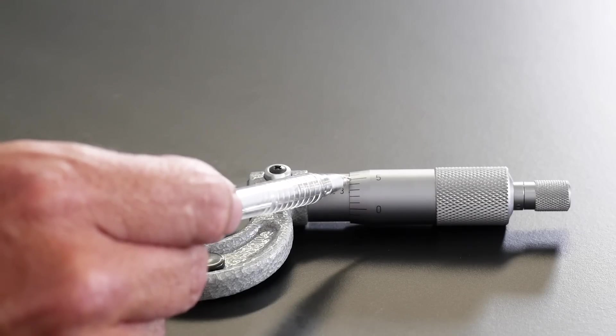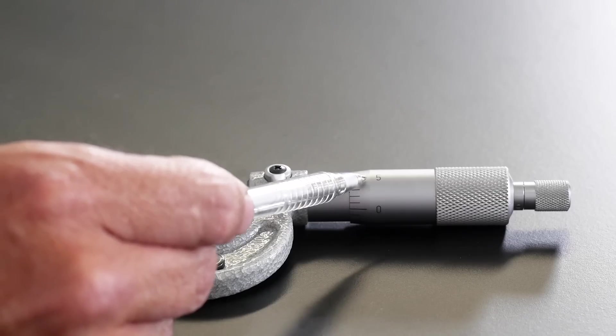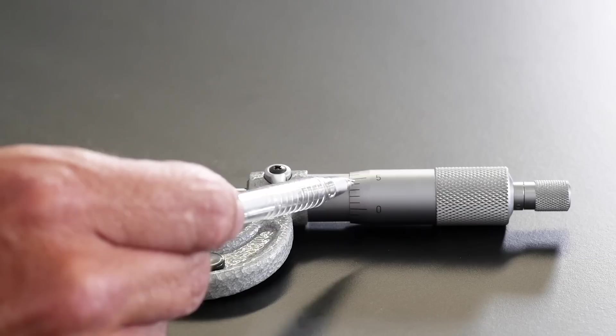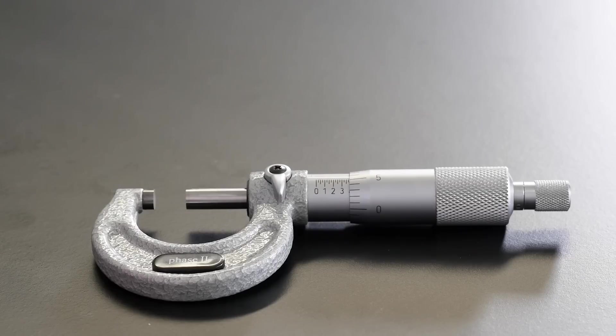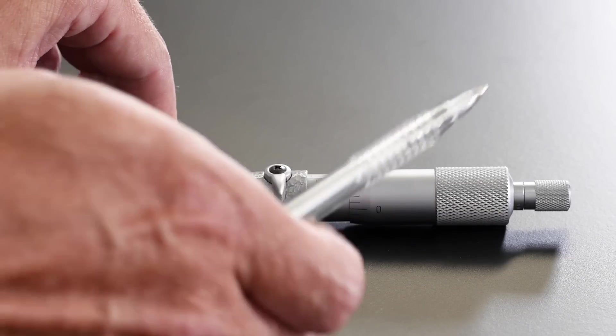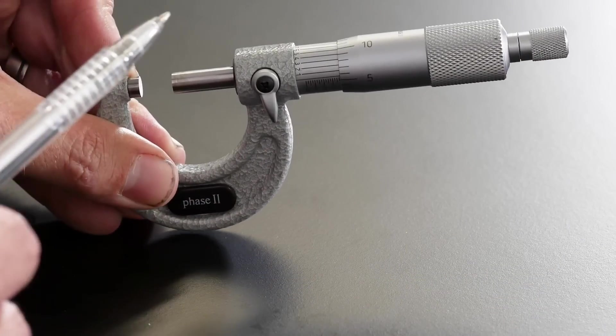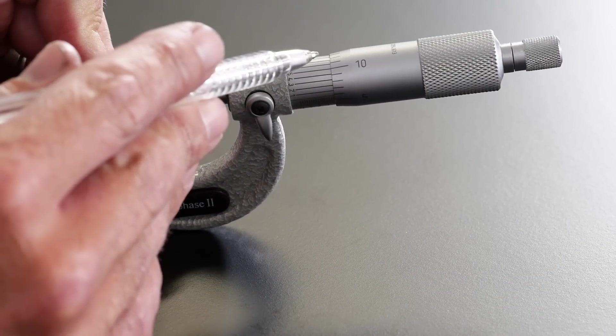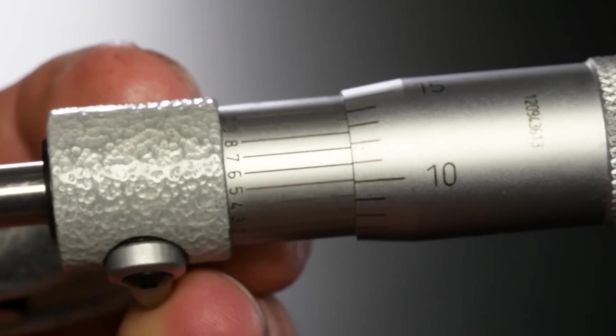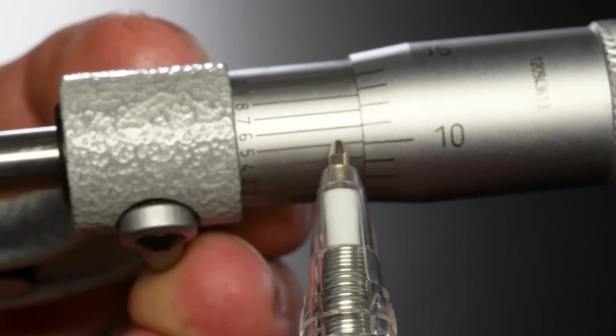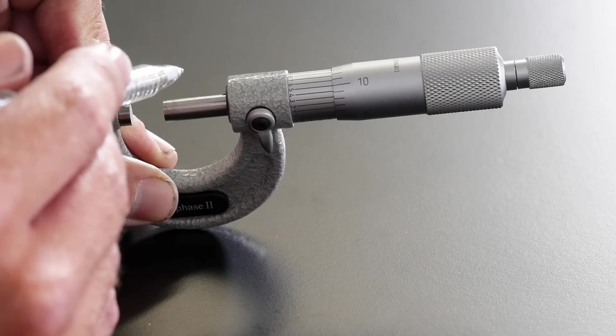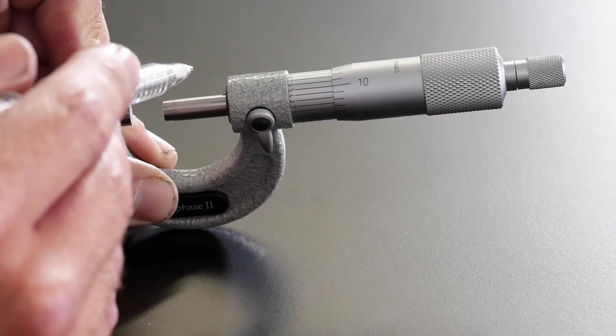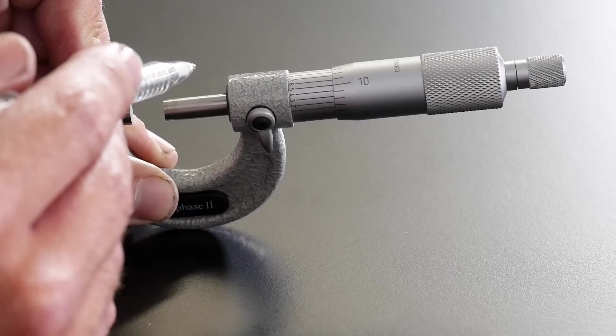We can also see though that we've come up just beyond the number five. Remember the thimble here represents thousandths of an inch and we can see that we've gone a little bit past the five. So we're somewhere beyond five thousandths of an inch and this is where the vernier scale comes in. What we want to do is have a look at our vernier scale and see which line comes closest to lining up. We can see in this point the six lines up correctly with our vernier scale which is our fourth decimal point or 0.0006 of an inch.